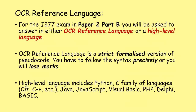Similar to pseudocode but different is the OCR reference language. For the J277 exam syllabus, in paper two part B, you'll be asked to answer coding questions in either the OCR reference language or a high-level language that you've studied. The OCR reference language is a strictly formalized version of pseudocode - you have to follow the syntax precisely or you will lose marks. If you want to use this in paper two part B, download the exam syllabus, look at the spec, and practice OCR reference language.